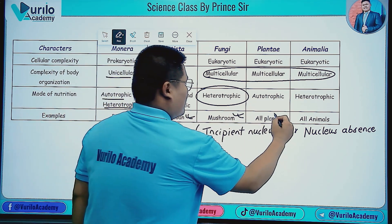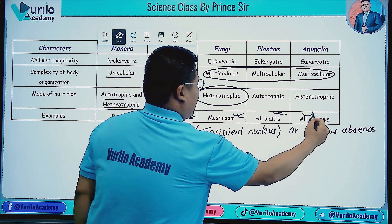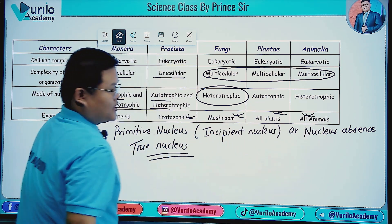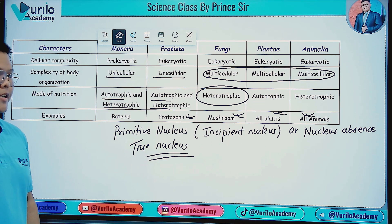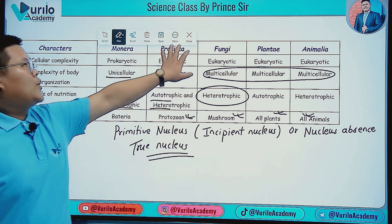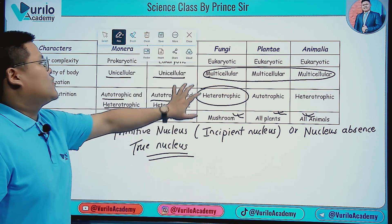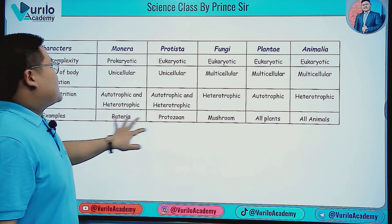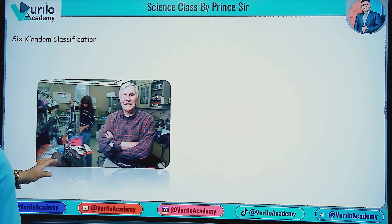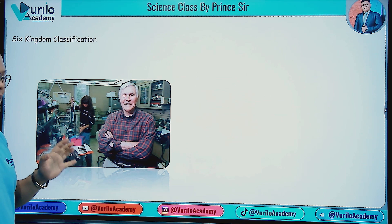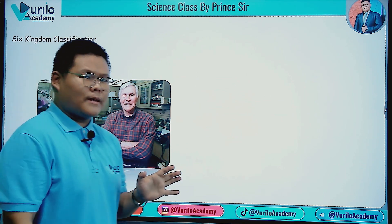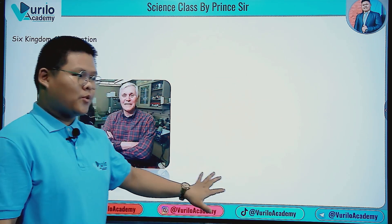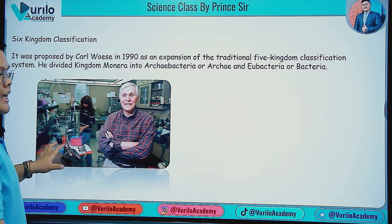Examples include: bacteria and protozoa for Monera and Protista; mushroom for Fungi; all plants for Plantae; and all animals for Animalia. We will also cover six kingdom classification later in the course.